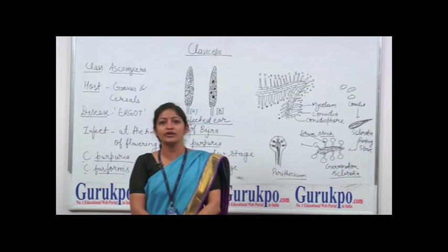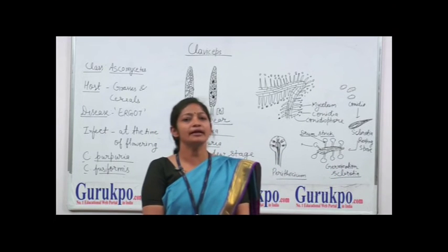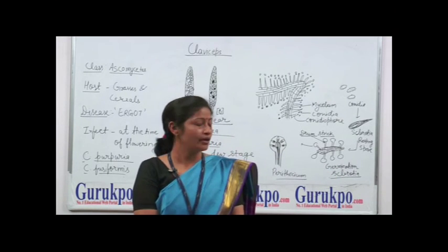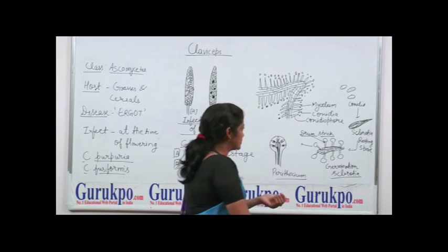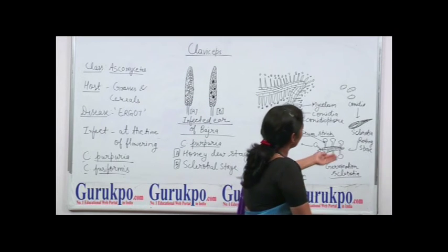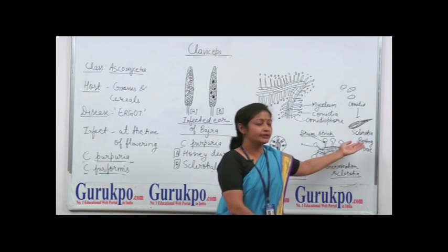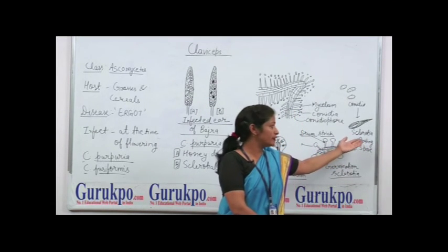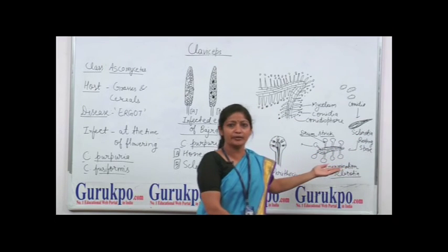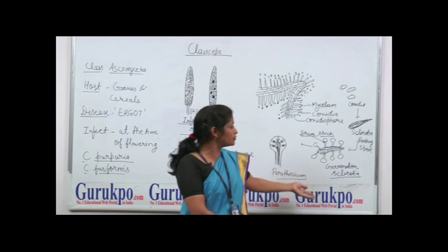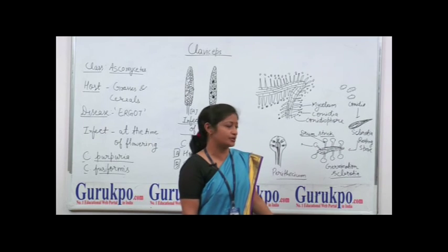These sclerotia are mostly formed in late summer and they fall on the ground. At favorable conditions, these sclerotia germinate and produce drumstick-like structures.